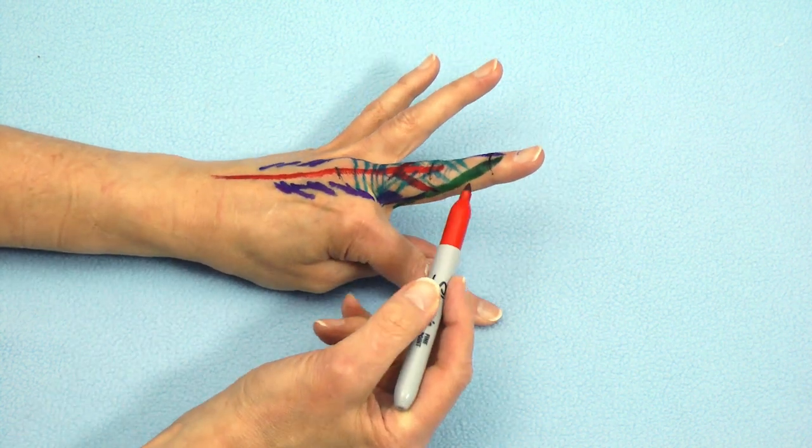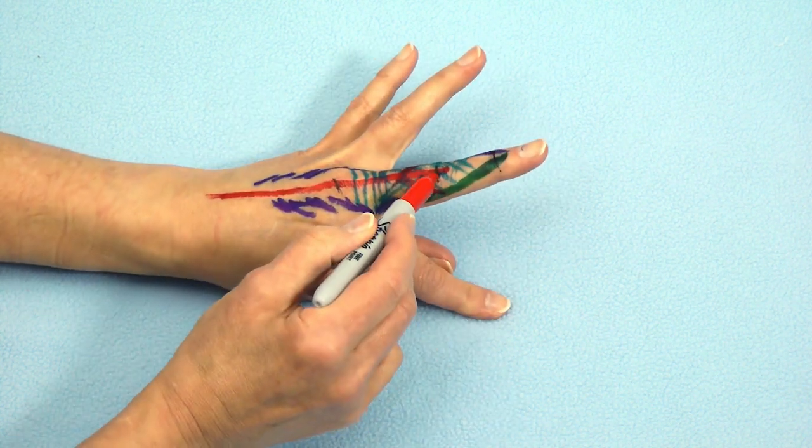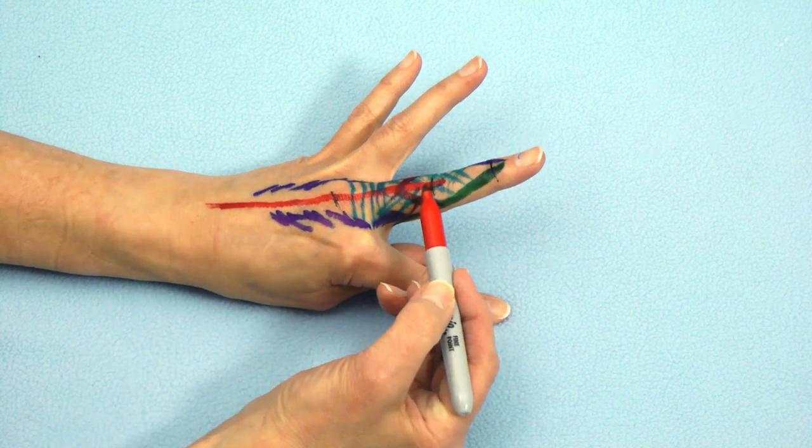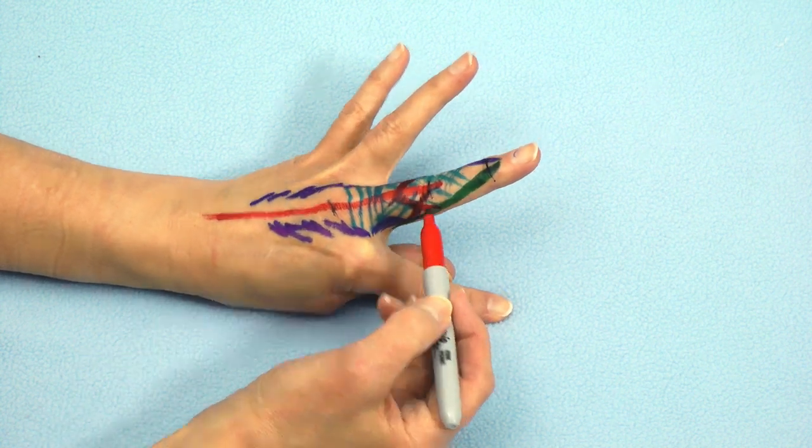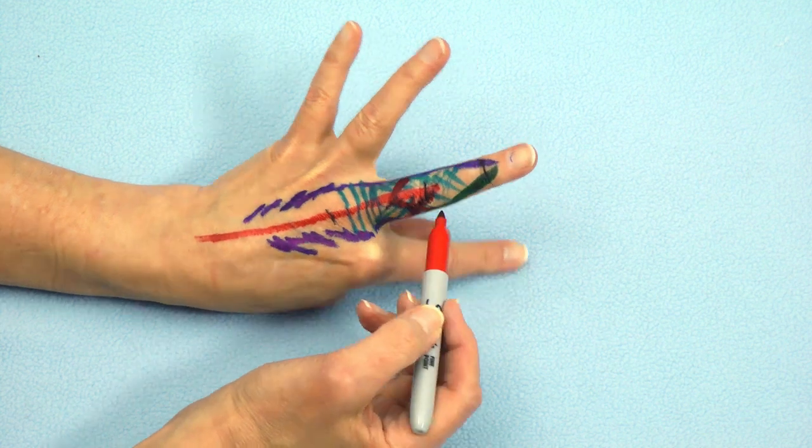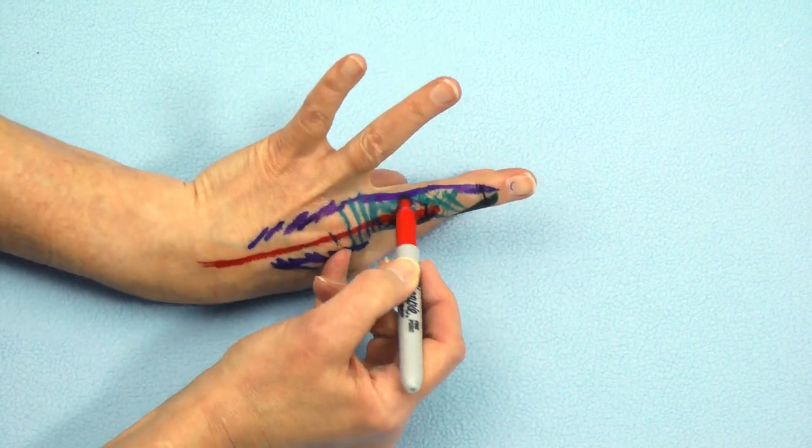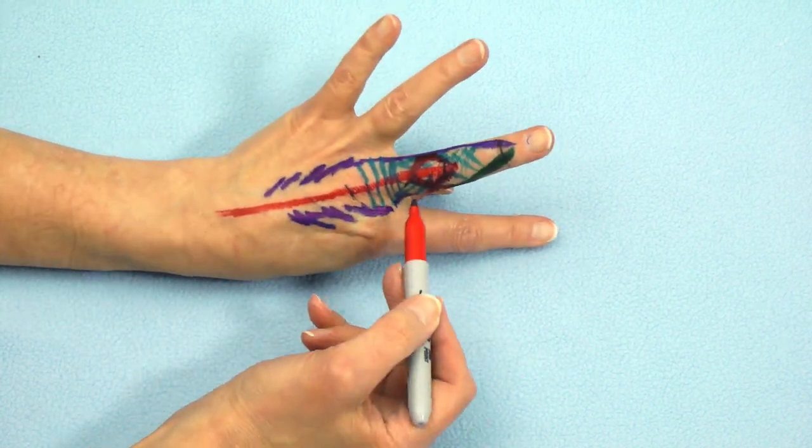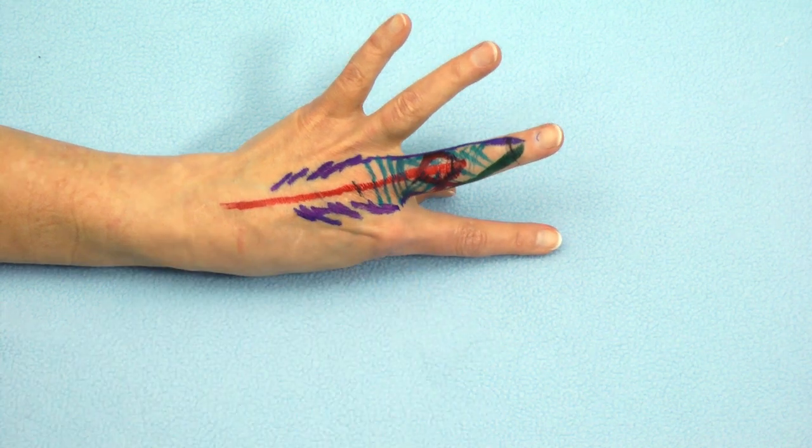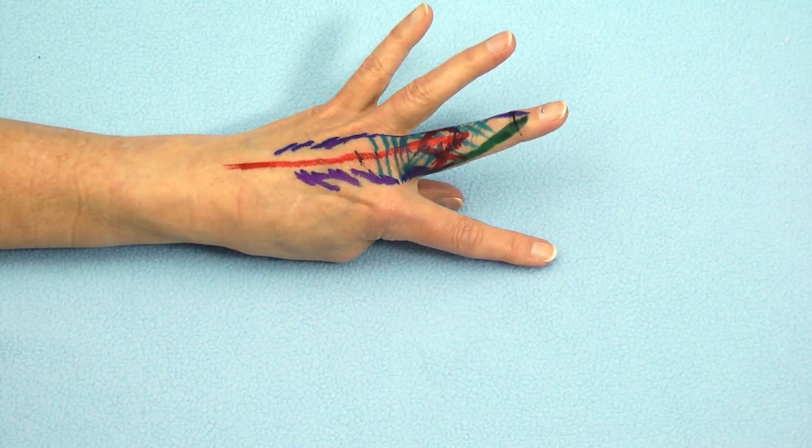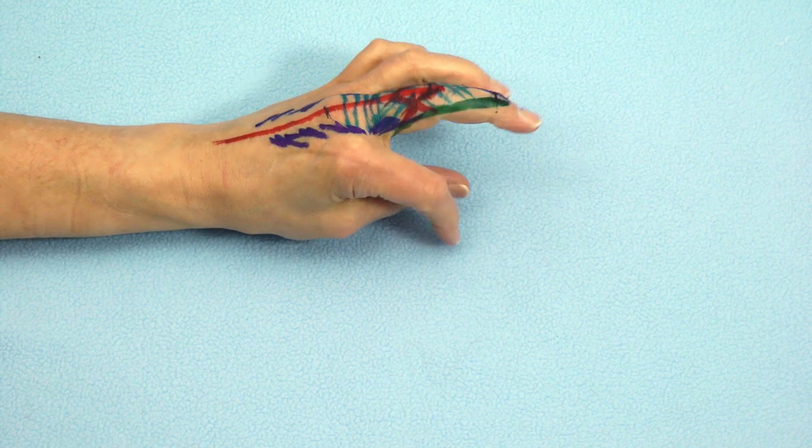but there is a contribution from the EDC that goes laterally to the lateral band. And there's also a contribution from the lateral band to the central slip insertion. On the cadaver, these conjoined lateral bands may or may not be clear. They are simply thickened areas of the dorsal apparatus.